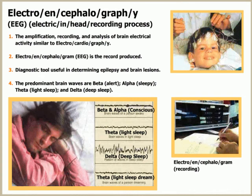This frame shows a picture of an electroencephalograph. An electroencephalograph is the machine that does the printout of an electroencephalogram. Electroencephalography is the amplification, recording, and analysis of brain electrical activity, similar to that in electrocardiography. An electroencephalogram is the recording produced.